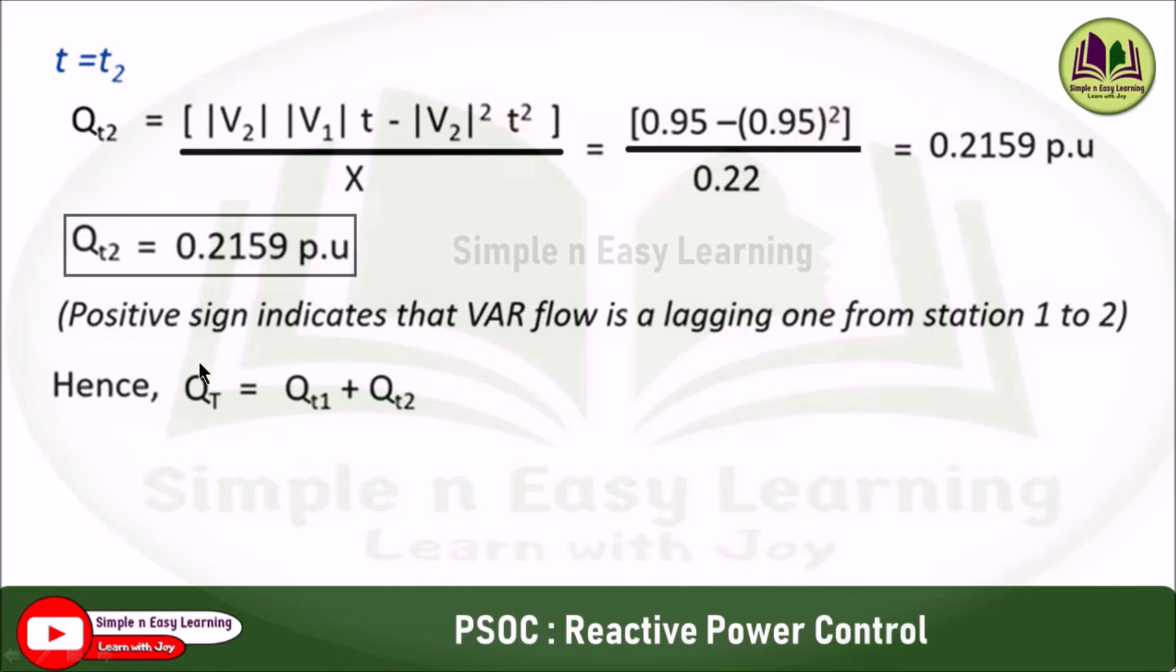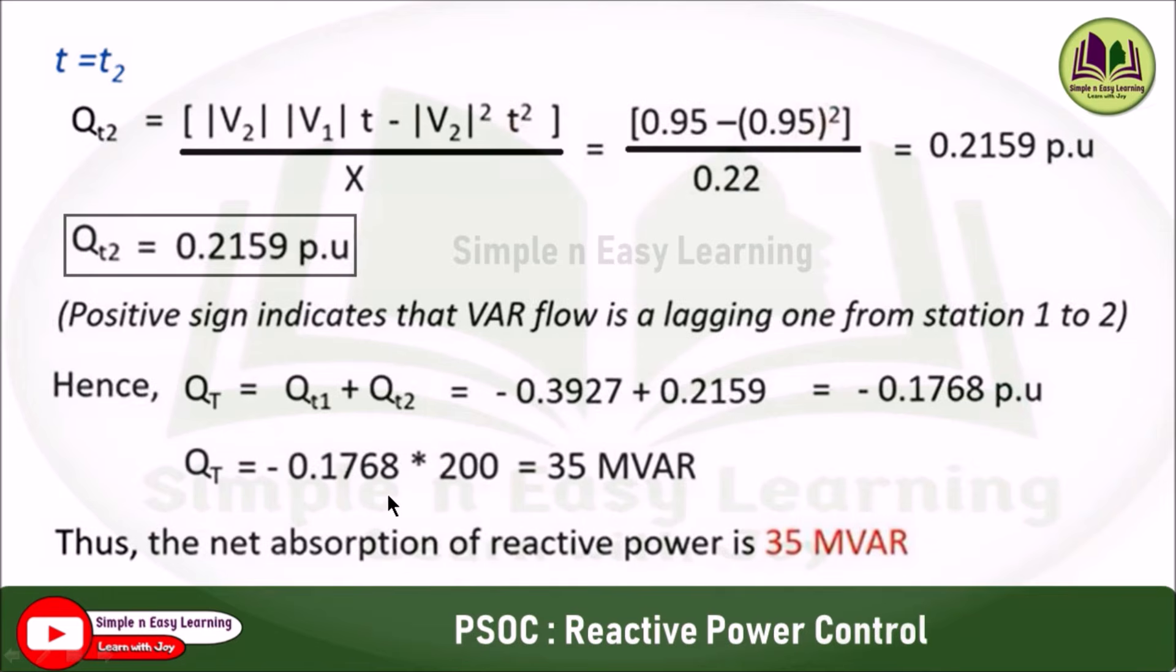Hence, the total reactive power equals QT1 plus QT2. Adding these two gives minus 0.1768 per unit. In terms of MVAR, QT equals minus 0.1768 times 200, which equals minus 35 MVAR. The net absorption of reactive power is 35 MVAR.